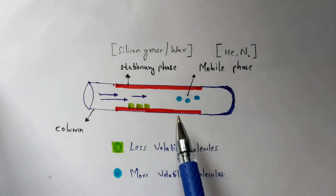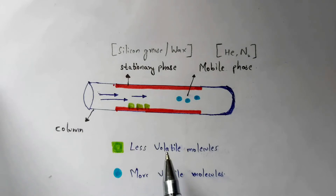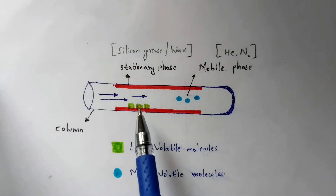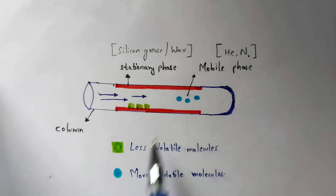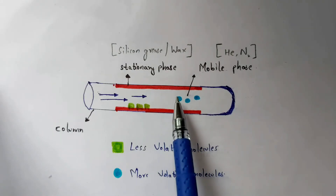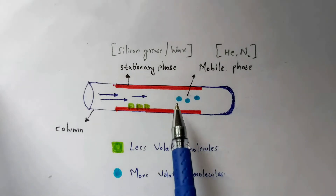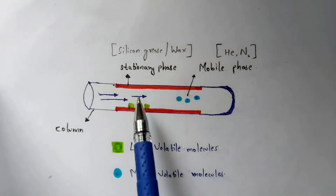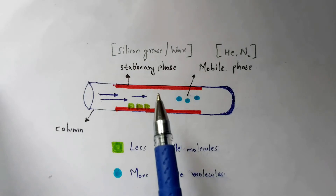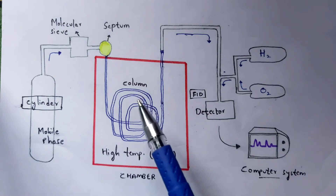As the column temperature gradually increases, the green-colored squared structures represent less volatile molecules and the blue color indicates more volatile molecules. Less volatile molecules interact with the stationary phase and move more slowly, while more volatile molecules pass quickly through the mobile phase. So more volatile compounds move much faster than less volatile molecules — this is the key separation principle.